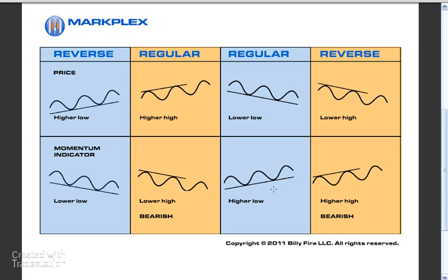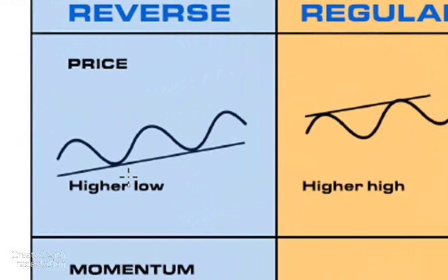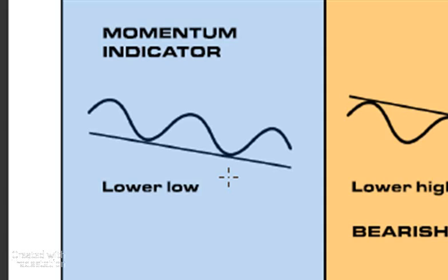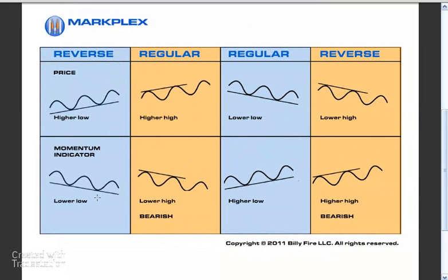Or for example, a lower low in price but a higher low in CCI or a momentum indicator, which would be perhaps seen as a bullish formation. Now what reverse or hidden divergence does is, for example in this case, we have a higher low in price and a lower low in the momentum indicator. Some would see this as perhaps indicating a continuation in price action direction.